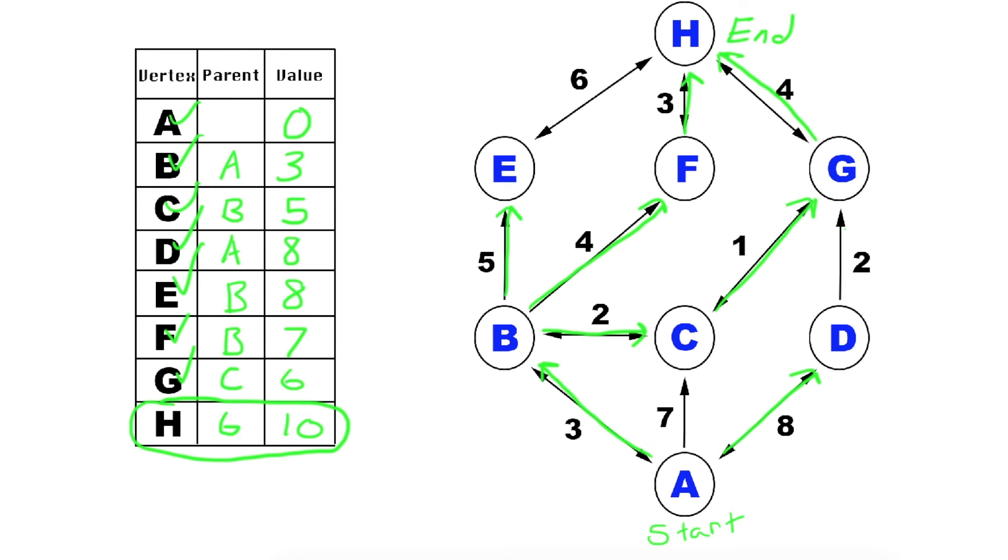Well, we just use the parent column. So H, the parent is G. So it means we're going H to G. Now we go to G. The parent is C. So we go down to C. From C, we go to B. Then we go B to A. There's no parent for A, which means that's our starting position. And that is how you get back to the beginning. So if you were only given this grid, and you needed to find the path, just backtrace through the parent column.